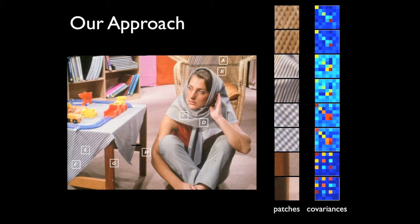Motivated by this observation, we introduce in this work two different image smoothing models. Both of these models make use of first- and second-order region statistics.